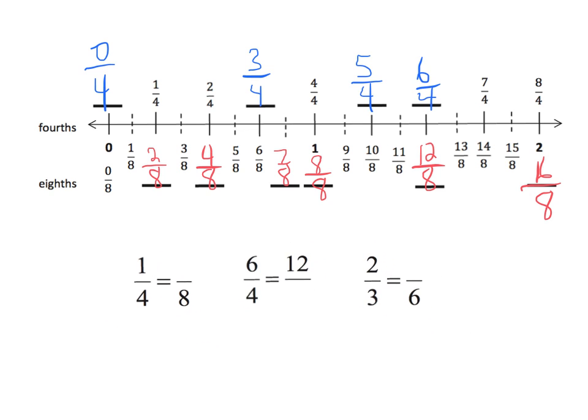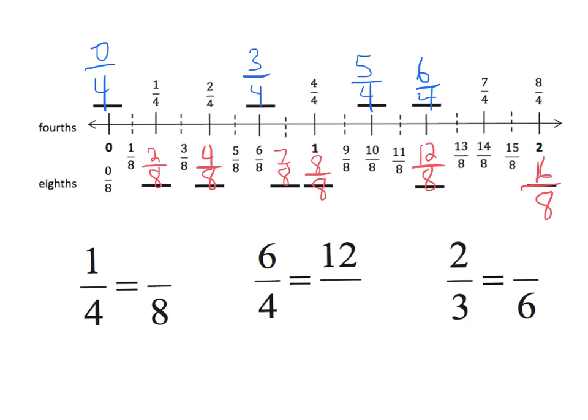All right, so now we can fill in some blanks here. So we've got 1 4th here, and 1 4th is equal to something. So let's look up at our number line, and here's 1 4th, and here's 2 8ths. They live at the exact same location, right here. So that means 1 4th is equal to 2 8ths. In the same way, 6 4ths is equal to 12 somethings. Well, let's look for 6 4ths. Boom, there's 6 4ths, and 6 4ths lives in the same spot as 12 8ths. So it would be an 8 that goes there. And then the last 2 3rd is equal to what? Well, 2 3rd should not be on this one. So right now, parents and teachers, I want you to kind of hold off on this one, because this one actually is applicable on the next number line.